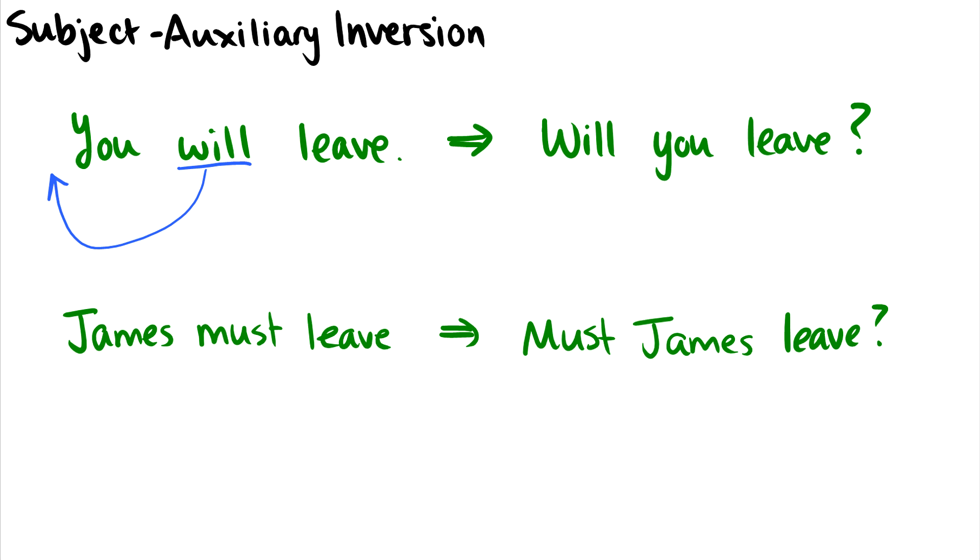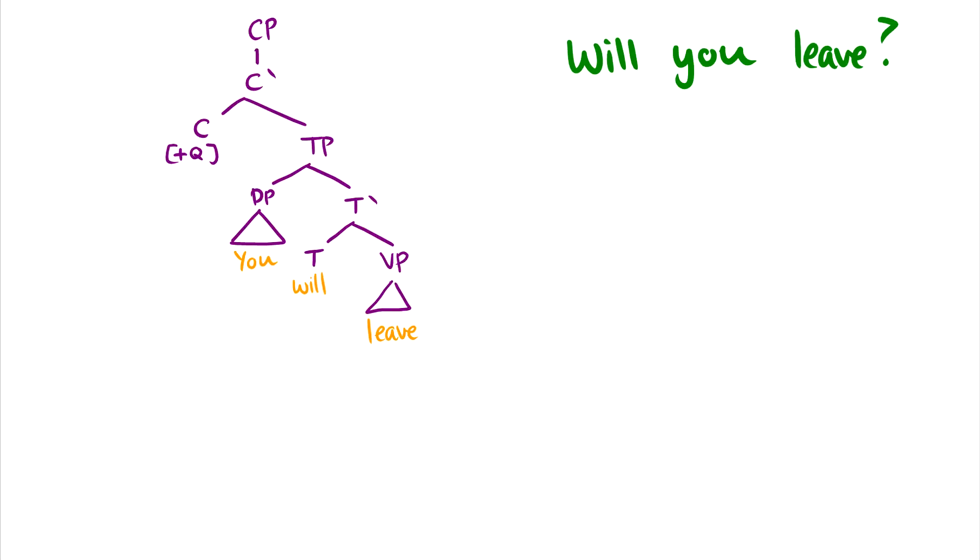Okay, what about 'James must leave'? We want to make that a question. We say 'must James leave.' In other words, we take this thing in T, this modal 'must,' and we move it up to the front of the sentence. And this is subject-auxiliary inversion. Another way we can think of it a little more colloquially is that they just switch positions. But as we'll see in our trees, saying they switch positions isn't a good way to put it because there's actually no switching at all. It's just movement of one of the words.